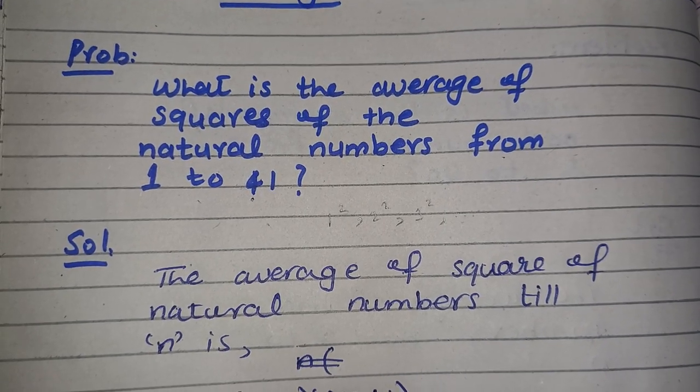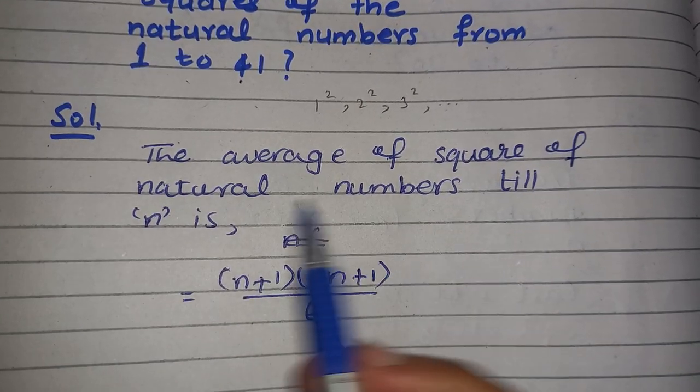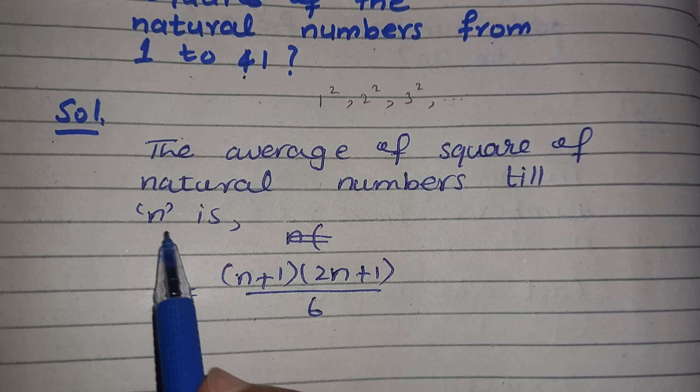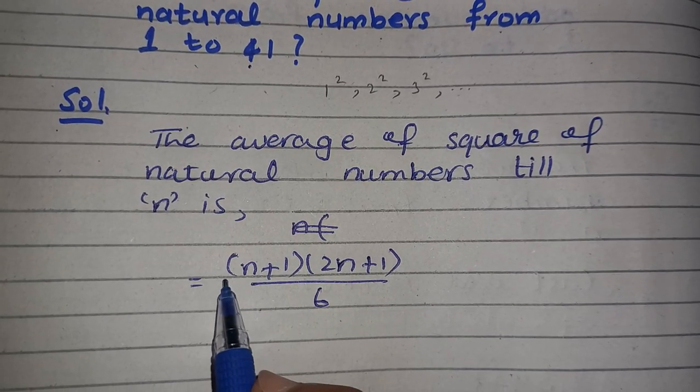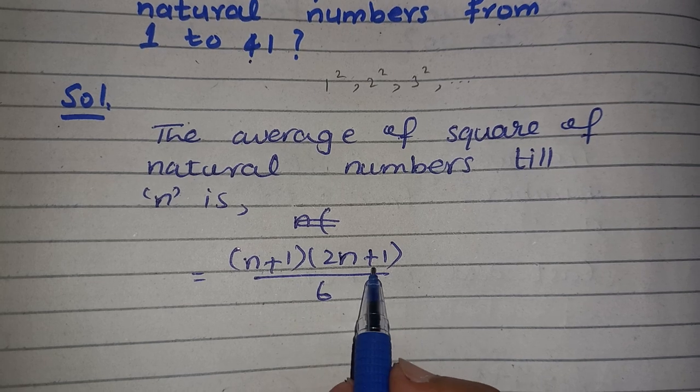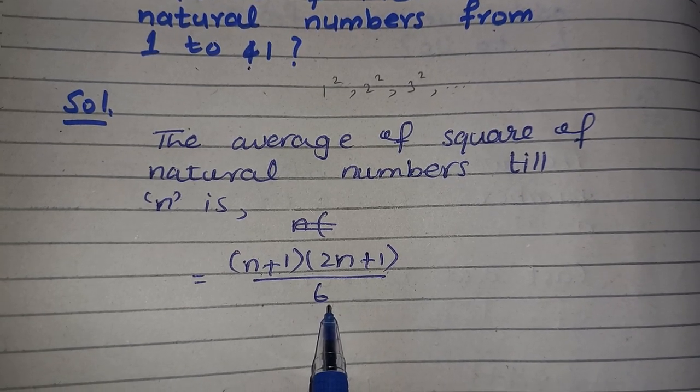The formula for solving these kind of problems is the average of square of natural numbers till n is equal to (n+1) into (2n+1) divided by 6.